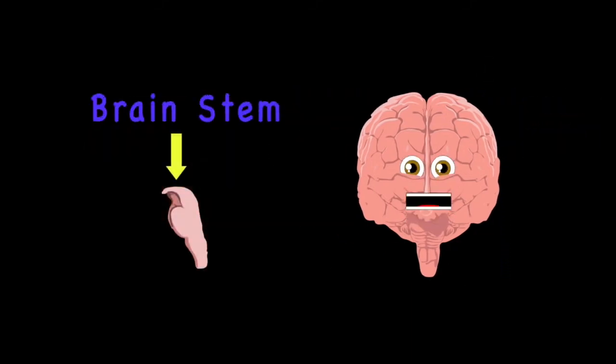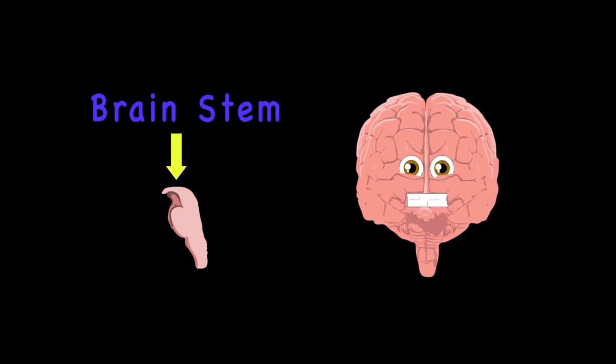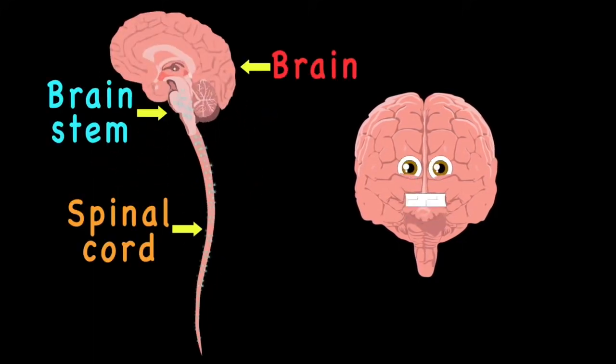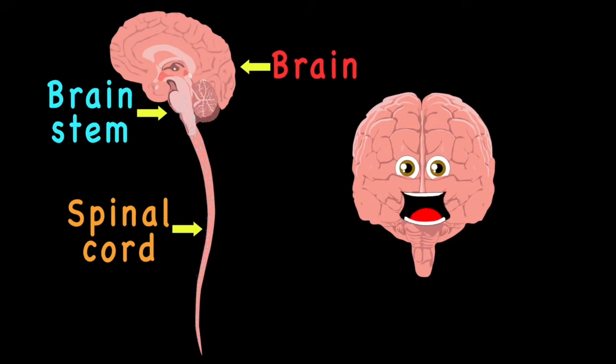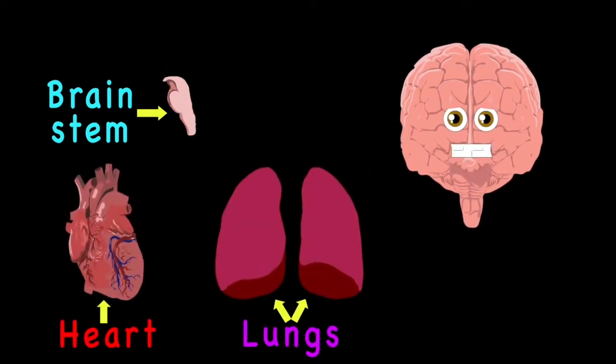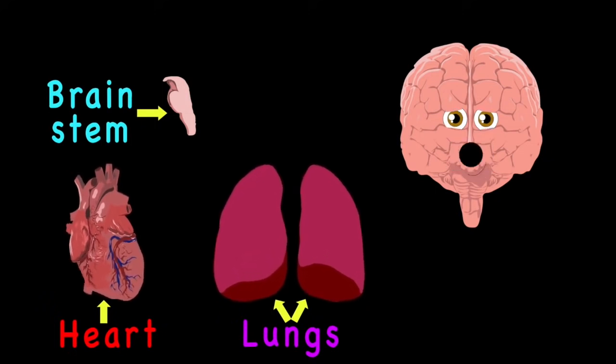Your brain stem is at the bottom of your brain, connecting brain to spinal cord to form a neural signal train. Your brain stem maintains vital control of your heart and lungs.